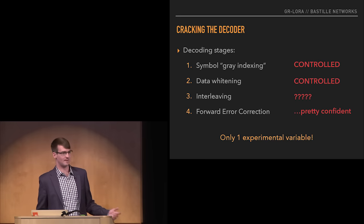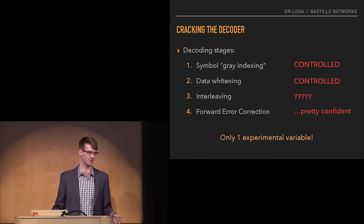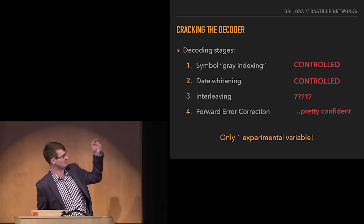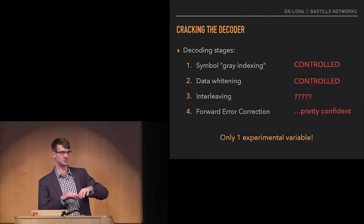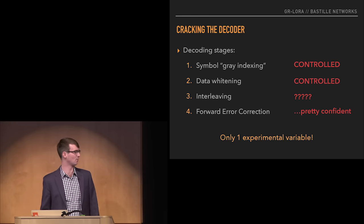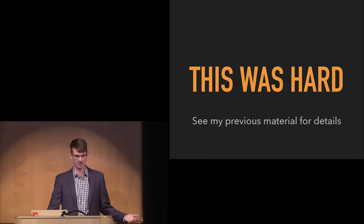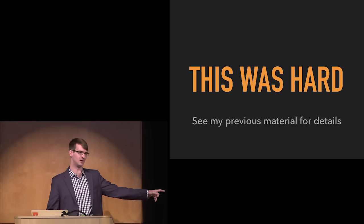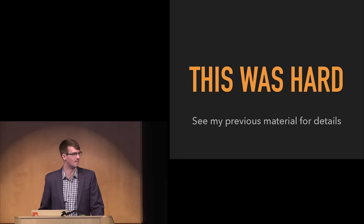The solution to crack the decoder — which I published before — involved making the right assumptions to divide the problem in half: addressing gray indexing and data whitening as one element, and interleaving and FEC as another separate element. You can then iteratively solve through it. Once we applied some intelligence and iterated, we were basically only left with one experimental variable, which combined with good assumptions we were able to solve for. This was the hardest part of doing all of this. All the information is out there in my prior research — GitHub link is there, and I'll plug the POC or GTFO and GRCon proceedings articles coming out imminently.